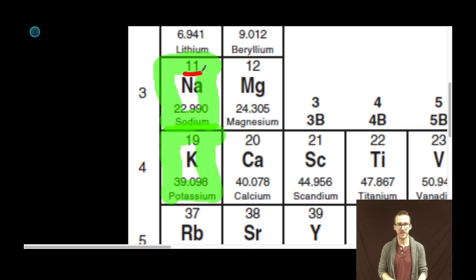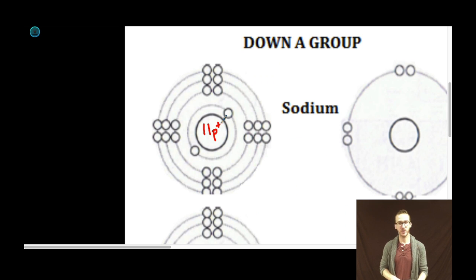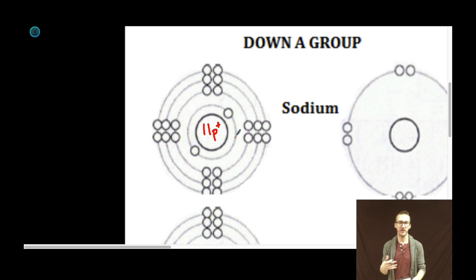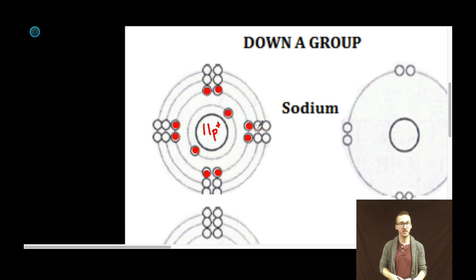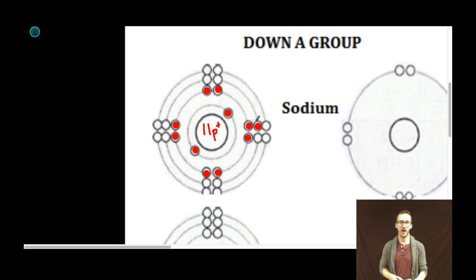Let's start with sodium — 11 positive protons in my sodium nucleus. I'm not going to worry about neutrons because neutrons don't have a charge. In the CVR model of the atom, the core charge is determined based on number of protons and number of inner level electrons. In a neutral atom of sodium, I'm also going to have 11 electrons. The first two go in the first main energy level, the next eight in the second, and sodium's 11th and final electron goes in the third main energy level.